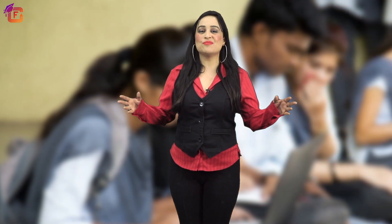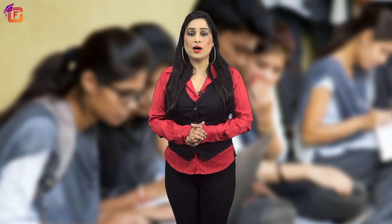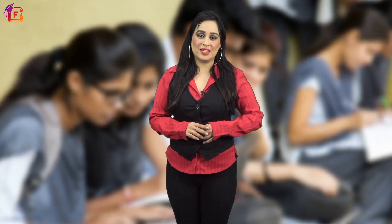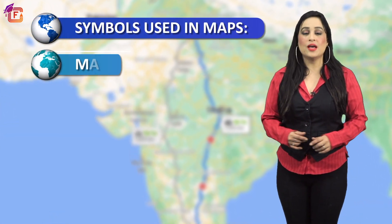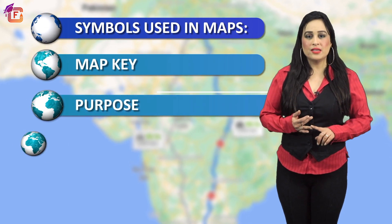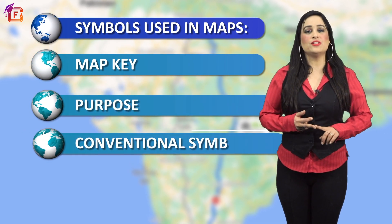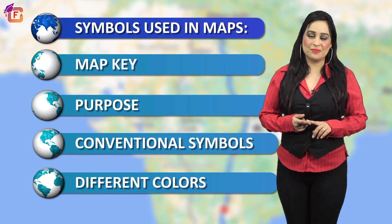Now it is the time to explore. Can you think what mistakes can students do while learning about different symbols used in maps? In this video, we have learned the symbols used in maps that include map key, purpose, conventional symbols and different colors. In the next video, we will learn about different types of maps. I'll take your leave. Till then, bye, stay happy.